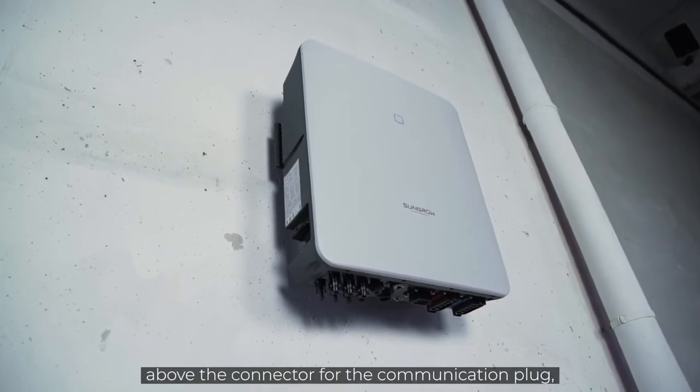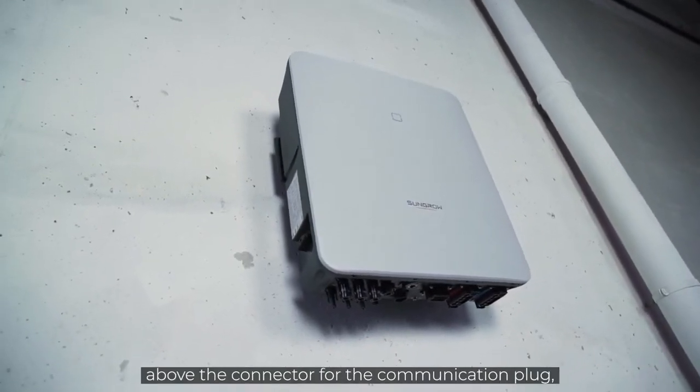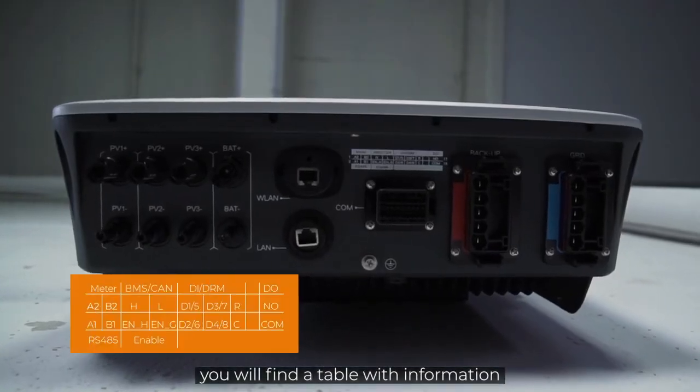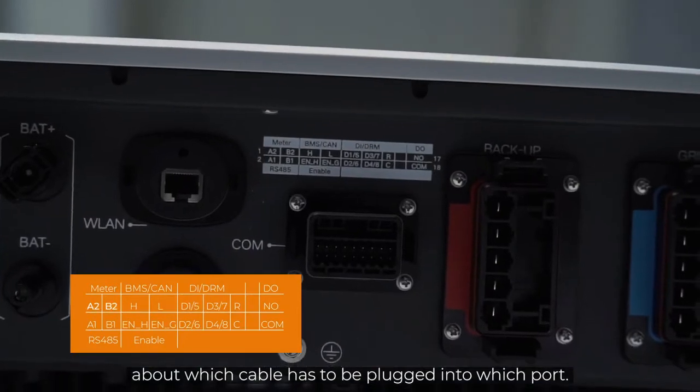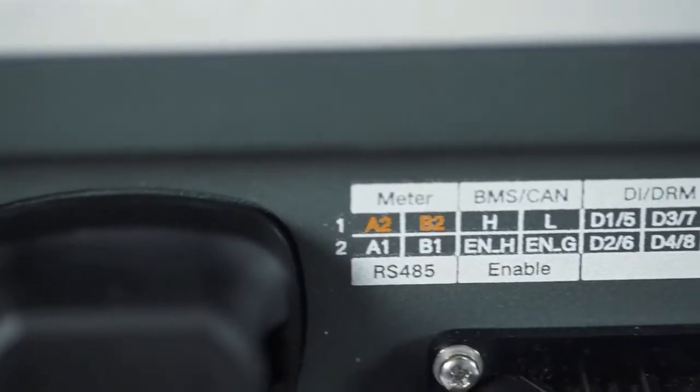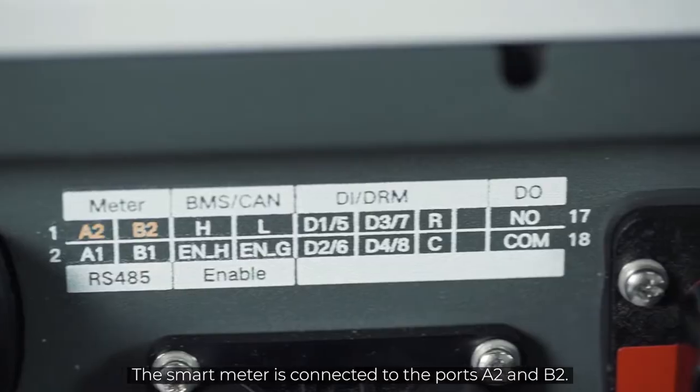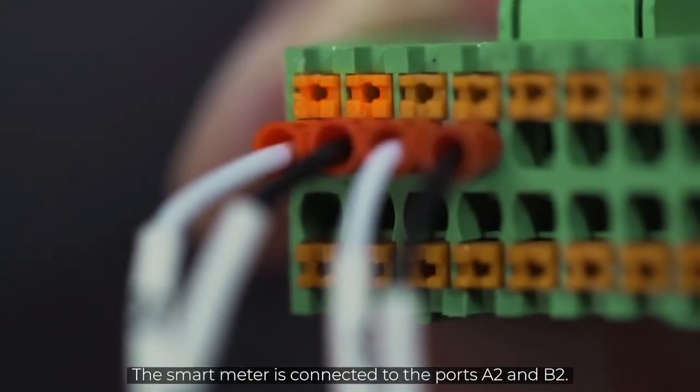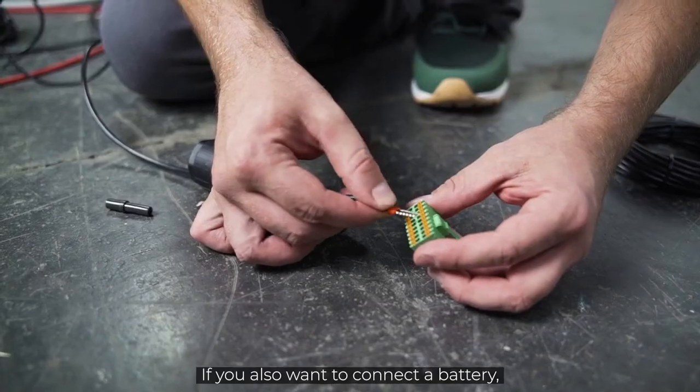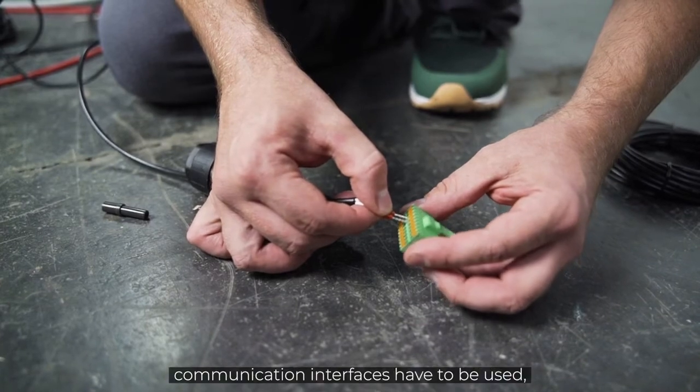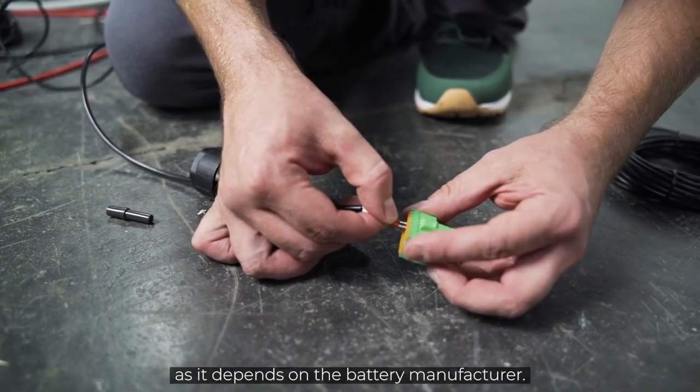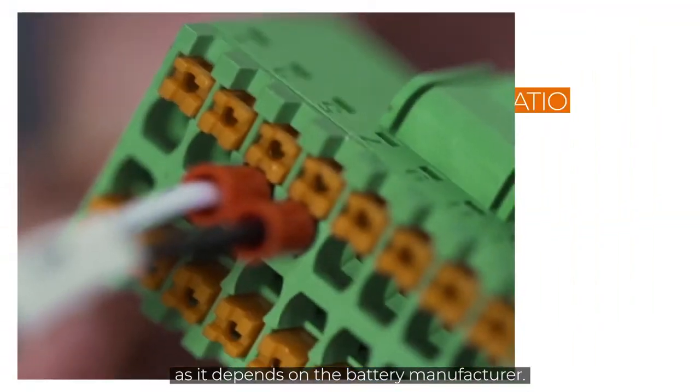At the bottom of the inverter, above the connector for the communication plug, you will find a table with information about which cable has to be plugged into which port. The smart meter is connected to the ports A2 and B2. If you also want to connect a battery, you need to pay attention which communication interfaces have to be used as it depends on the battery manufacturer.